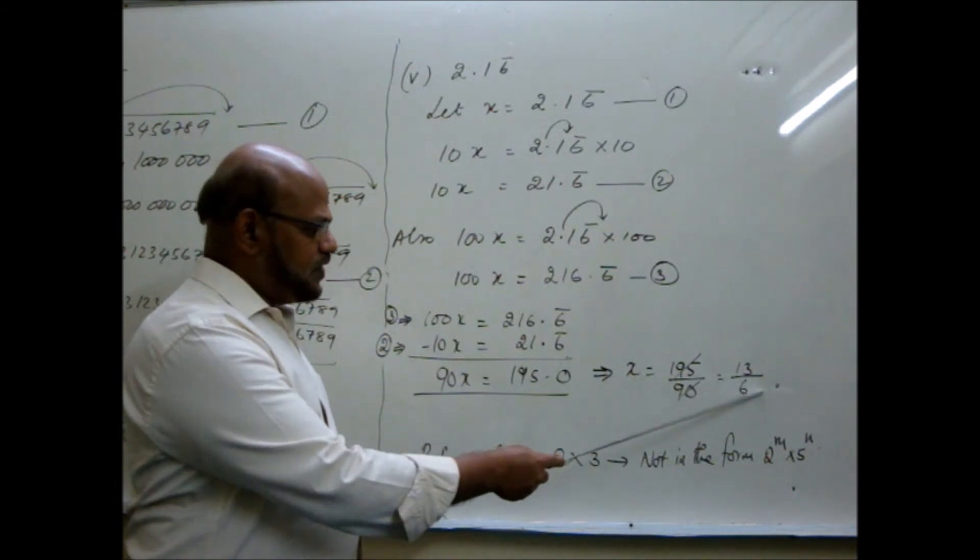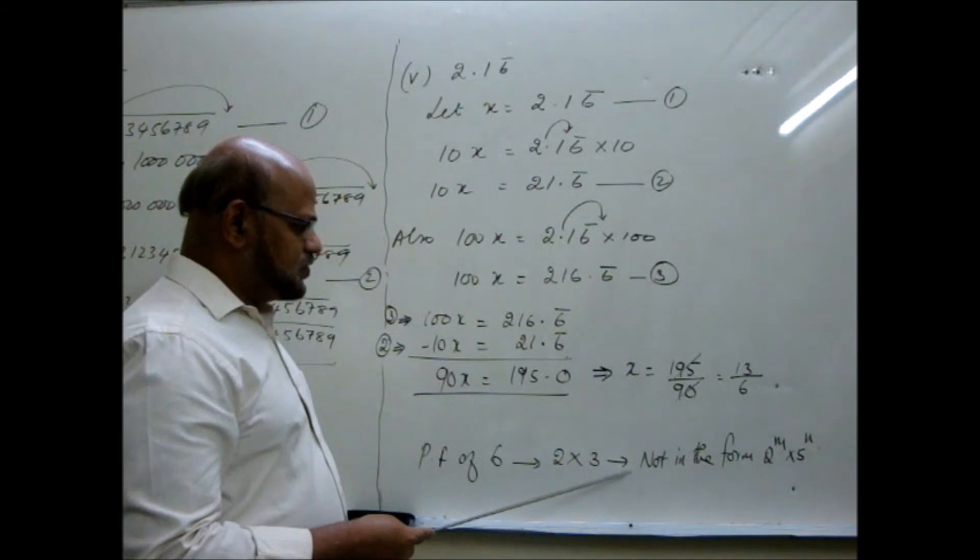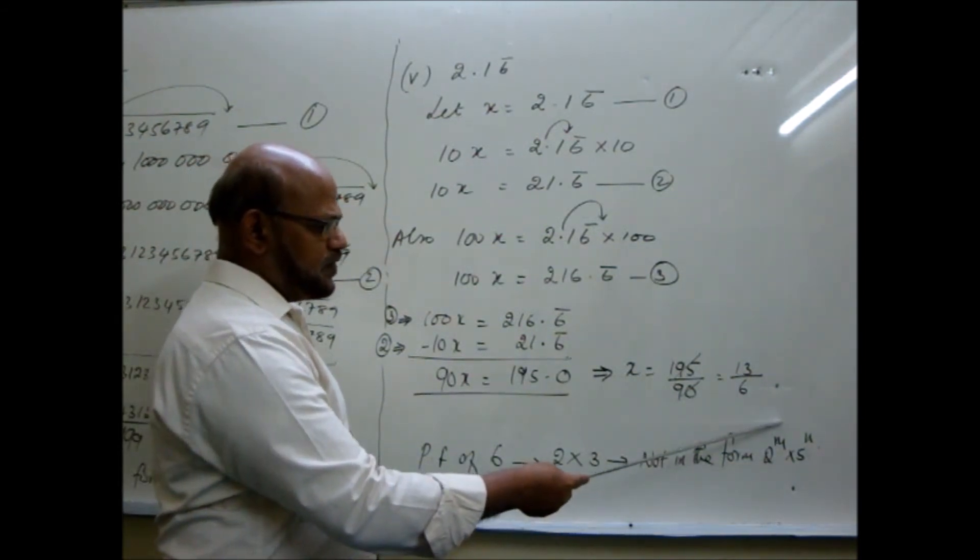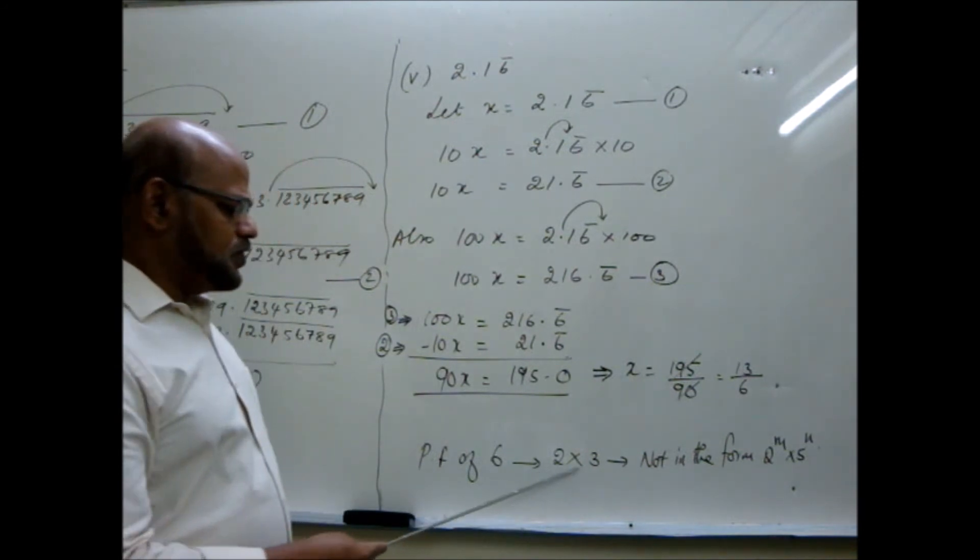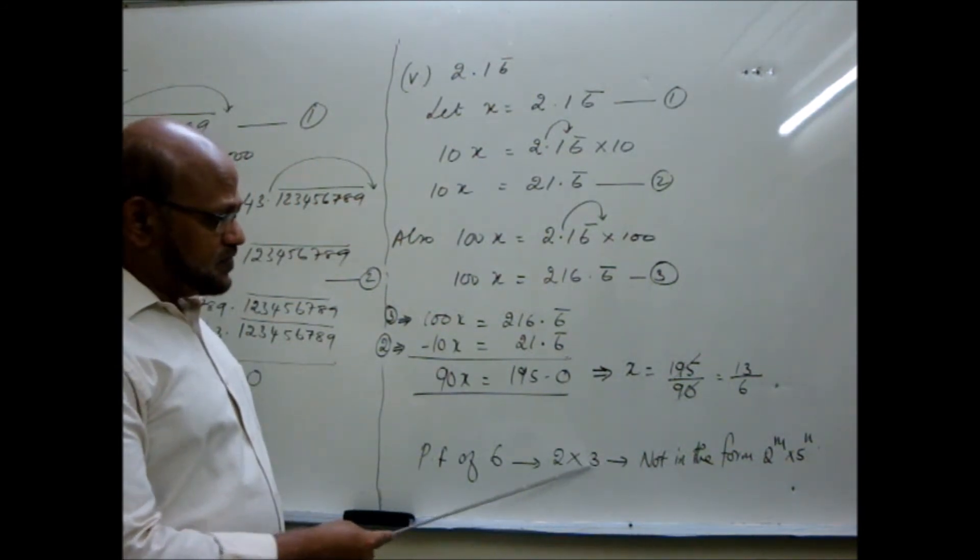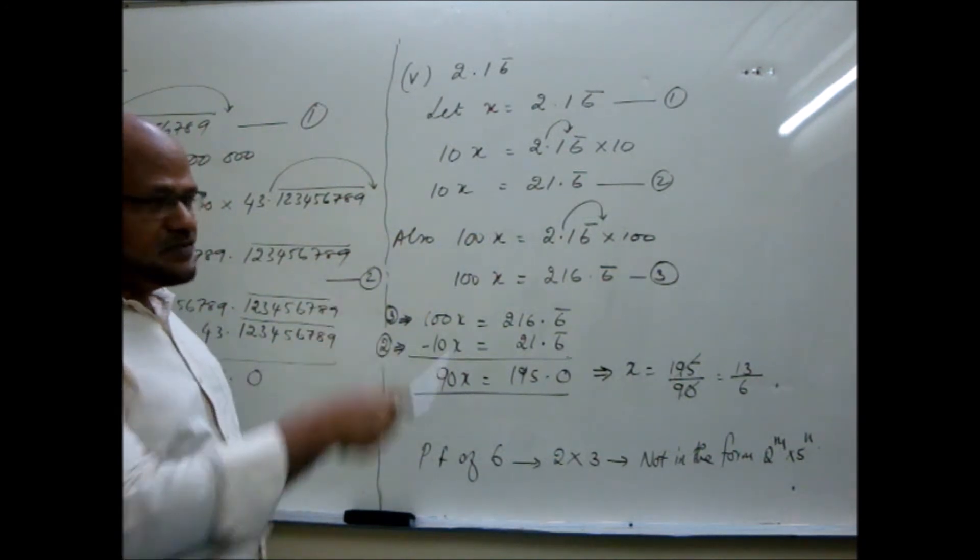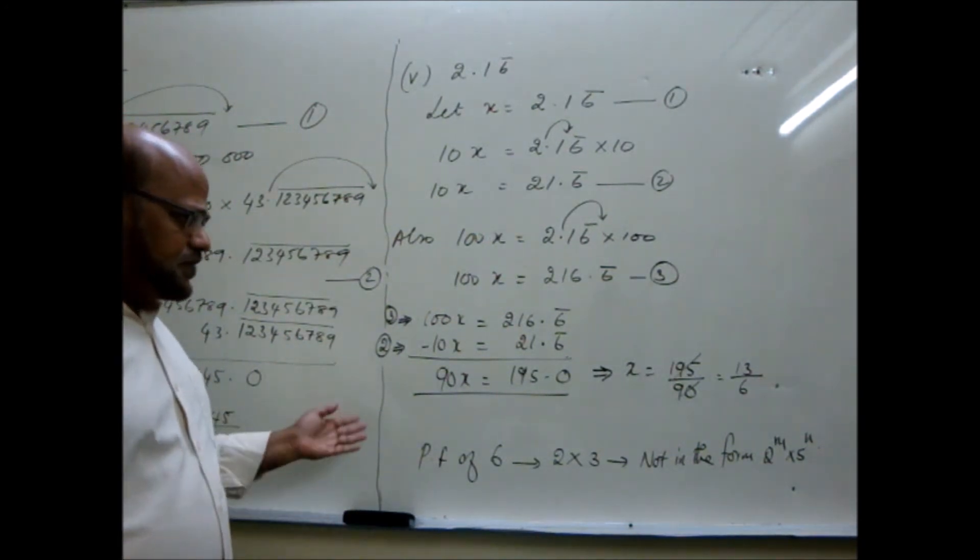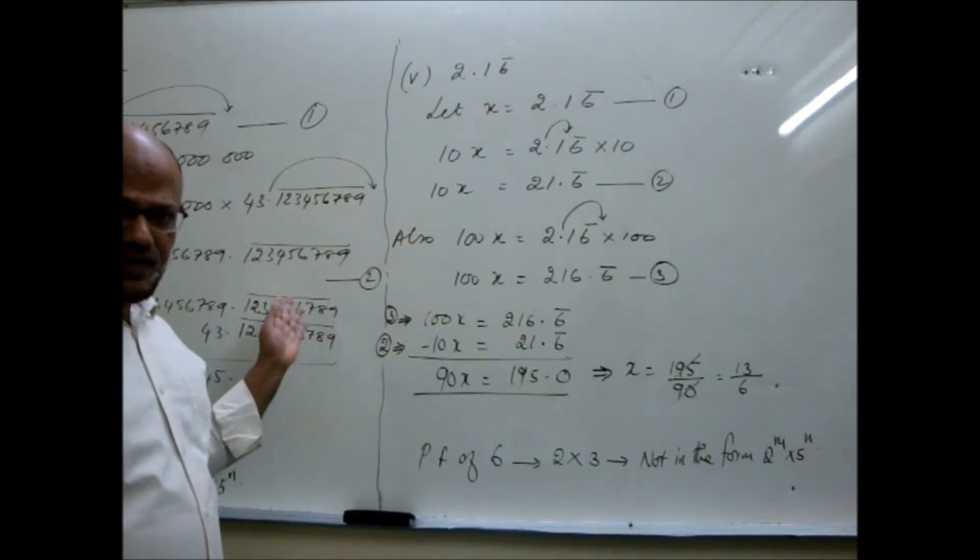See now 6. What is the prime factor of 6? 2 into 3. There is no 5 in it. So not in the form 2 to the power m, 5 to the power n. Not in this form. It has 2 into 3 coming. Because of this 3 only, that was giving a repeating decimal. So just the reverse way, writing in the form P by Q. If P by Q form is given, writing in the decimal form. These are all we are having here.